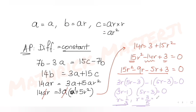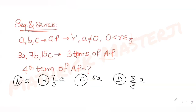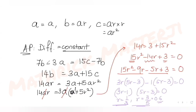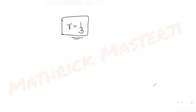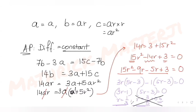We have two values for the common ratio: one-third (approximately 0.33) and three-fifths (0.6). According to the given condition, r must be between 0 and 0.5, so r cannot be greater than 0.5. We cancel out r = 3/5, giving us r = 1/3.